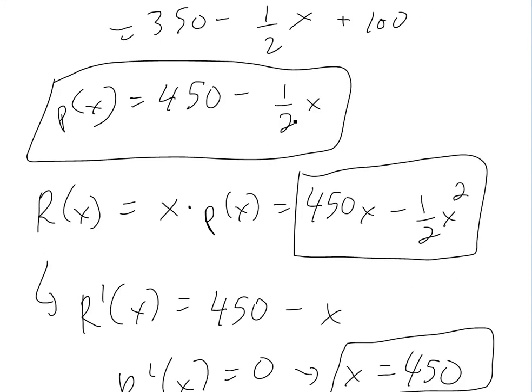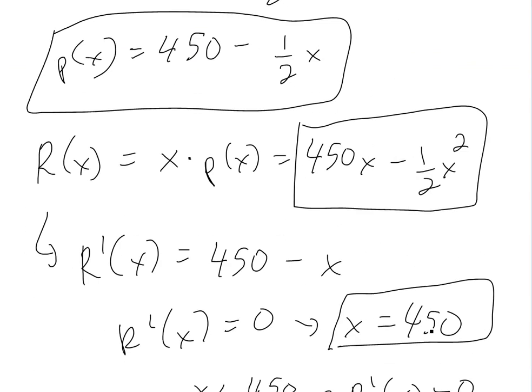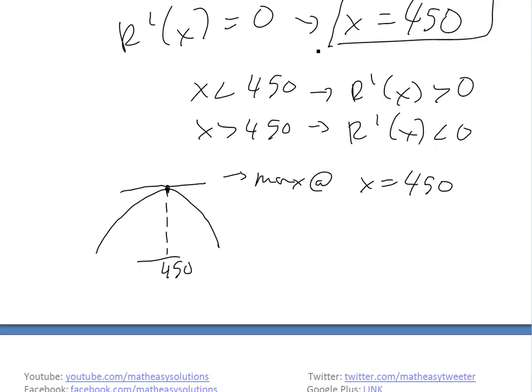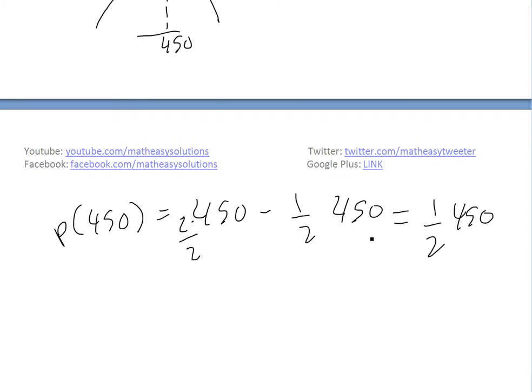Now we look at the price function: P(x) = 450 - (1/2)X. At X = 450 DVD players sold, you have maximum revenue. To find the rebate cost, we plug in the number: P(450) = 450 - (1/2)(450). Using common denominator 2, this equals (1/2)(450) = 225. So at maximum revenue, you're selling at $225 per item.